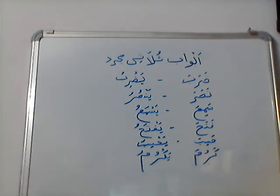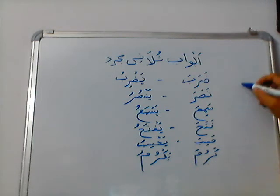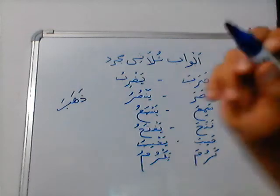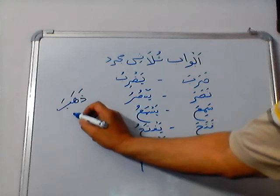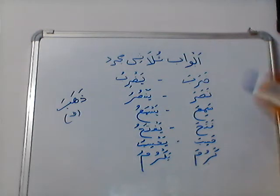Arabic dictionaries, therefore, include the first letter of one of these groups with each new verb to inform the readers how it can be changed into present or future. For example, when we search the verb Zahabha in a dictionary, we find a small letter Fa alongside it, which indicates that the verb Zahabha will be changed on the pattern of Fatah Yaf Tahu.